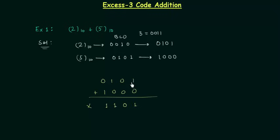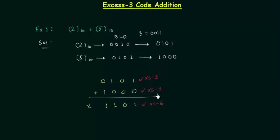This number is the XS3 code for 2, and this number is the XS3 code for 5. What does that mean? It means we have XS3 in 2 and XS3 in 5, so we have XS6 in the sum. When you add two numbers in XS3 the sum is going to be XS6. Let's try to prove it. First I will perform the simple addition: 2 plus 5 gives us 7.